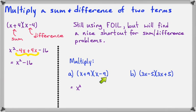Outer times outer is minus 9x. Inner times inner is plus 9x. And last times last is minus 81. Now the two middle terms are equal but opposite, so they're going to add up to zero. And our final answer here is x squared minus 81.